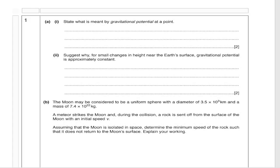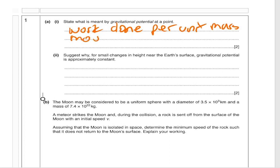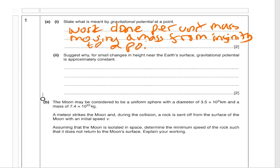Here we have question one on paper four, part A i: state what is meant by gravitational potential at a point. This is a standard definition for two marks. It is the work done per unit mass — because it's potential, not potential energy — moving a mass from infinity to a point. If you fail to say per unit mass, you will lose one mark.